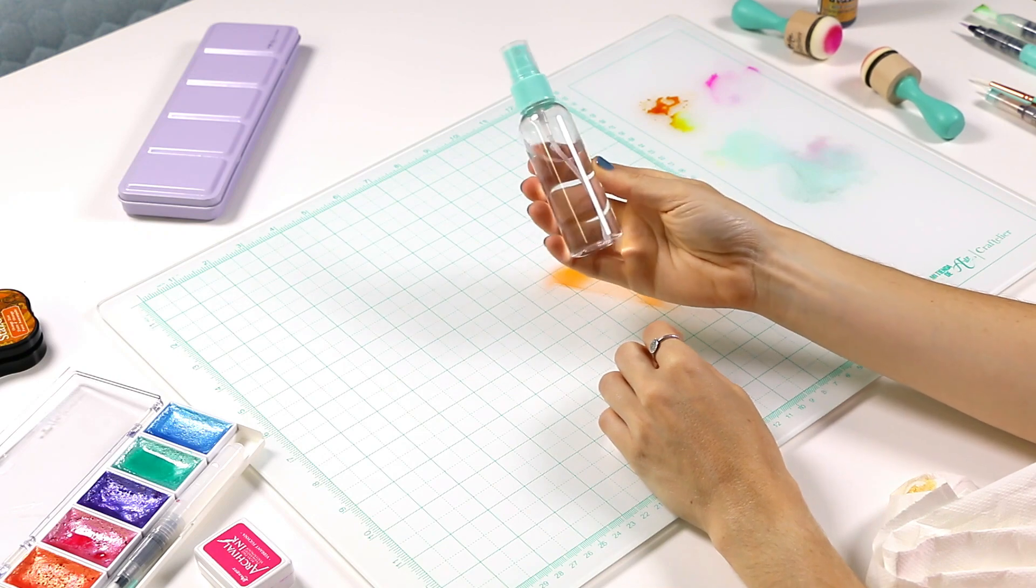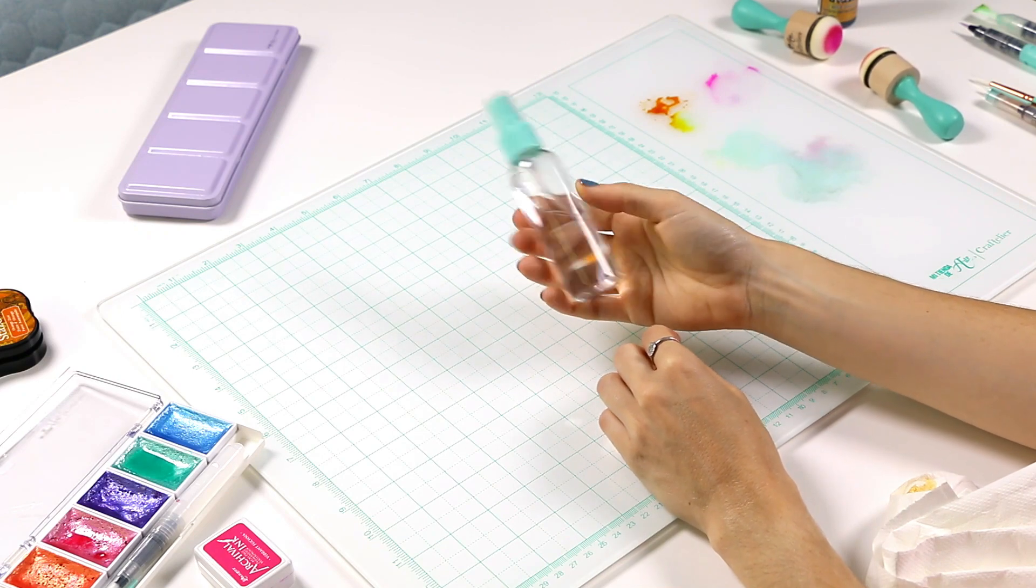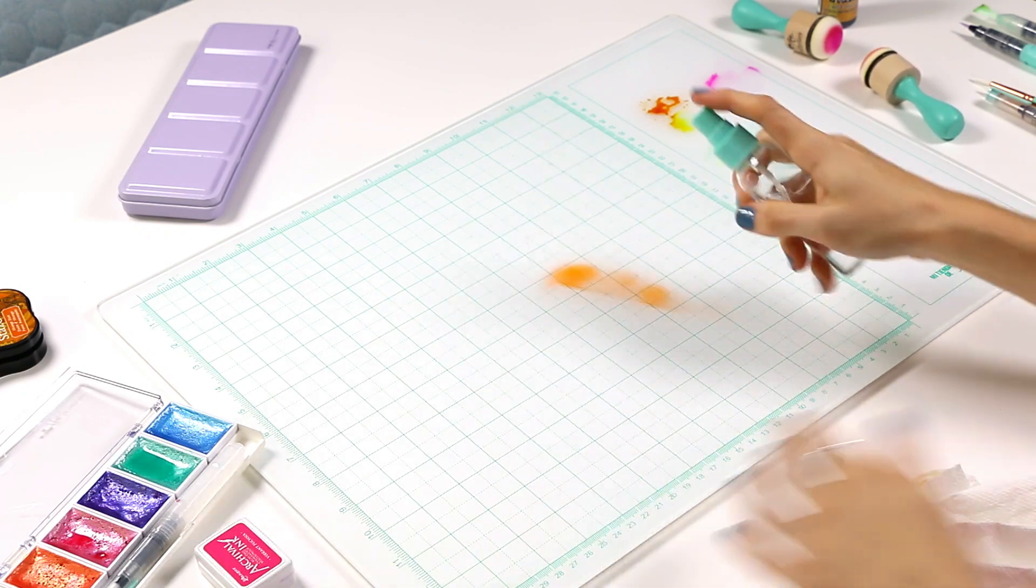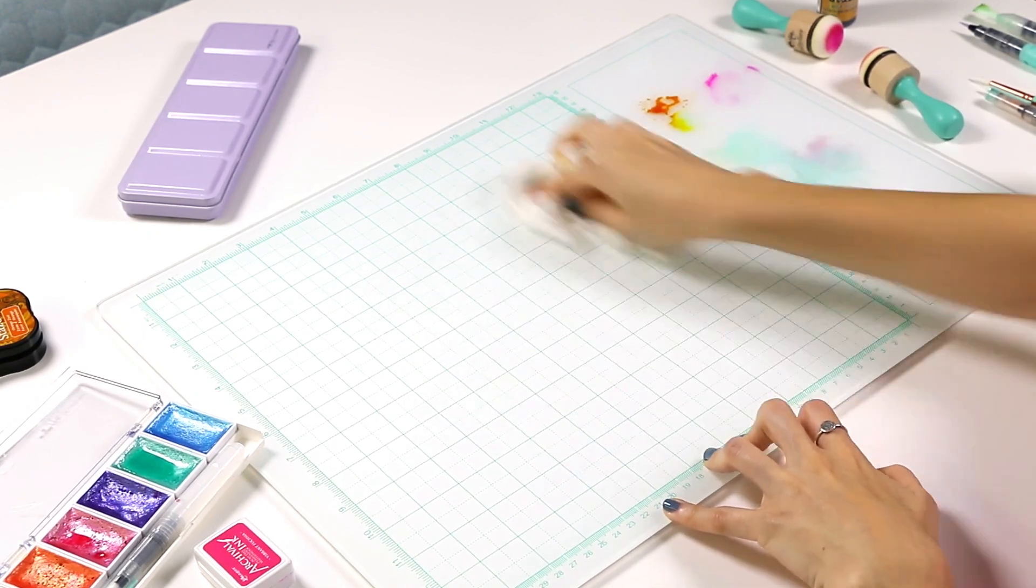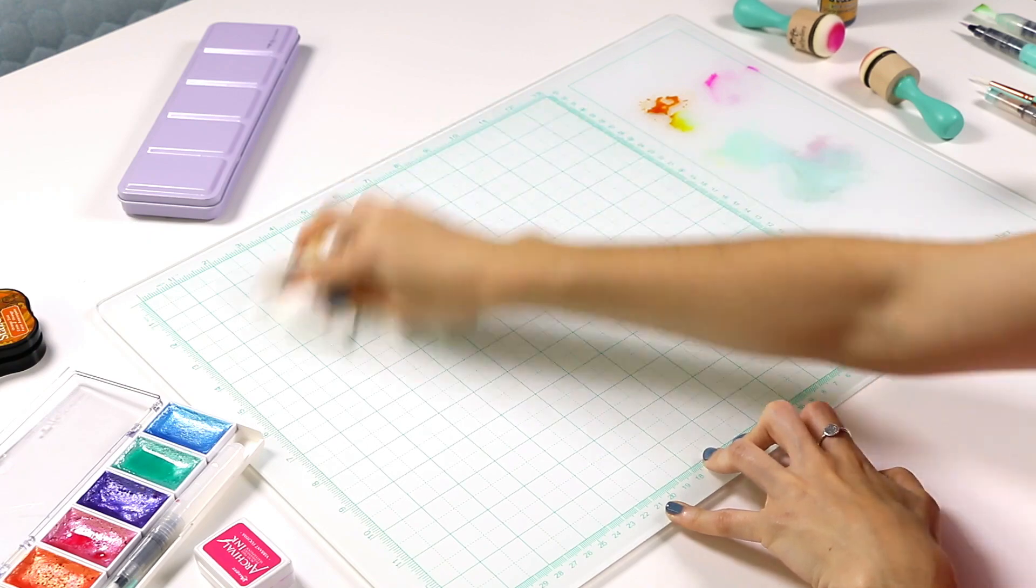The best thing about this mat is how easy to clean it is. You just need to apply some water and clean the surface with a paper towel. With just a few swipes, your glass mat will be as good as new.